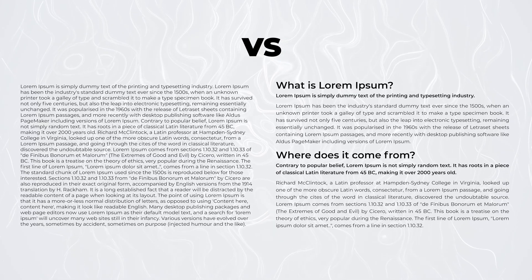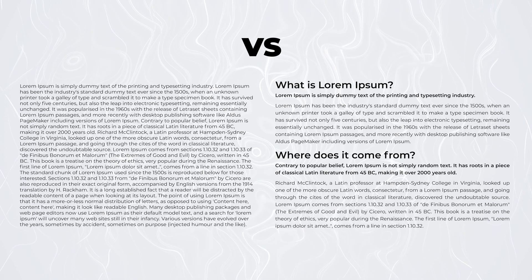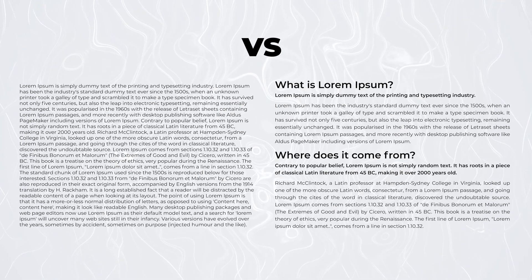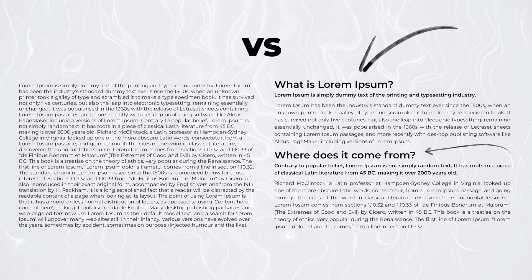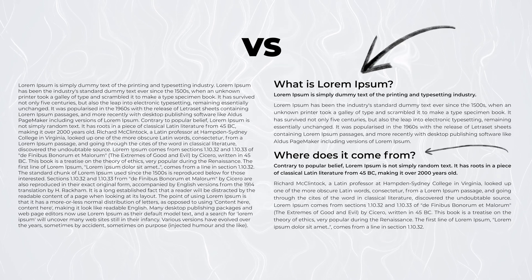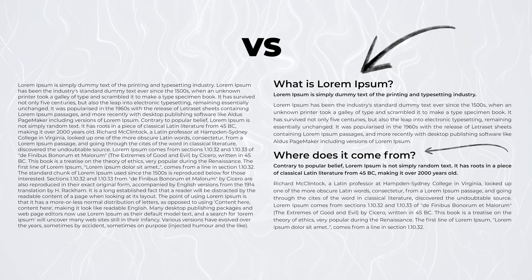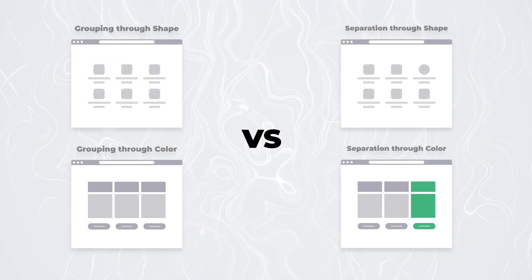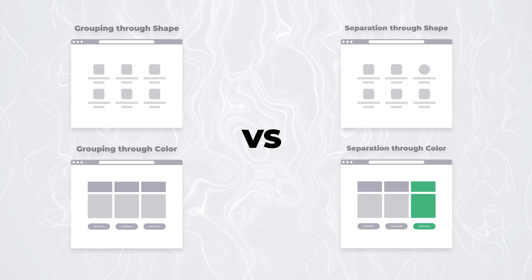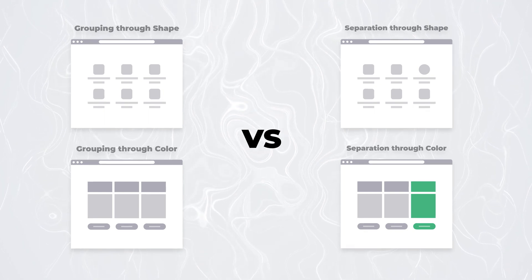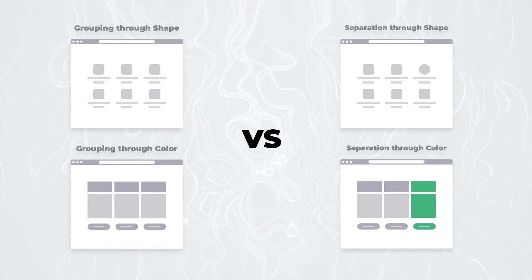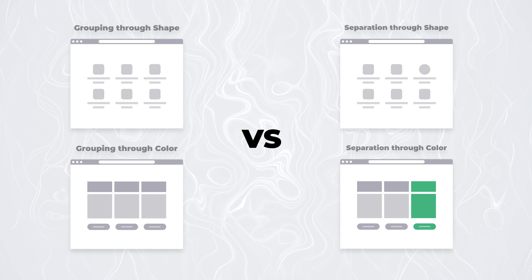The most prominent example of the size principle in action is present in the way we format text. We can use titles and subtitles to signify order and importance to the user. The logic is simple: the bigger something is, the more important it is. Through color and shape, we can not only group similar items together, but also highlight and distinguish any item that is more important from that group.